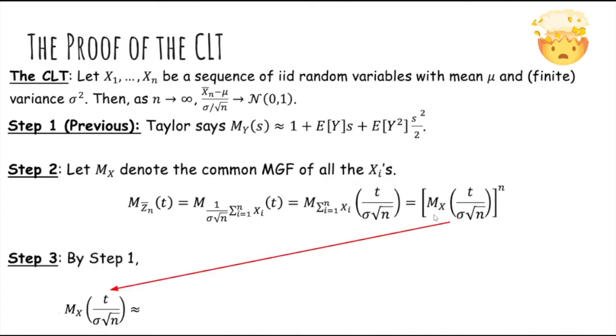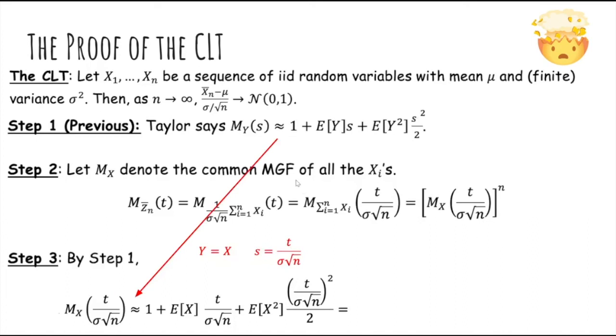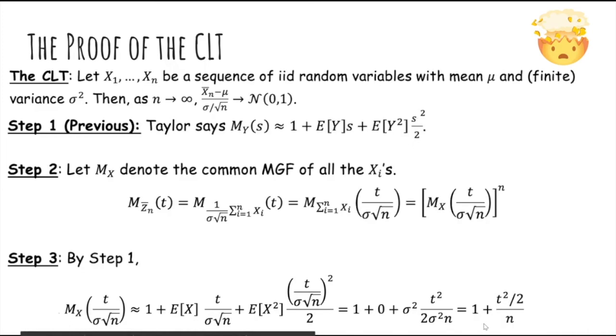So now let's try to evaluate the inner term here. Because this expression is actually just the same as in step 1, all we need to do is replace Y with X and replace s with this inner term. Plugging those things in, we get this expression. Because we assume the mean is 0, we can get rid of the middle term. And we know from the previous slide that E[X²] is just σ². So doing some algebra, we get 1 plus t²/2 over n.